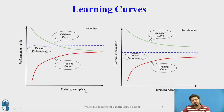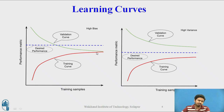As we increase training samples, the training and validation curves tend to converge to a proper point. If this convergence point is below the desired performance level, it means the model is converging but still deviating from the expected values. This gap indicates bias, and as we noted, bias is always an indication of underfitting.